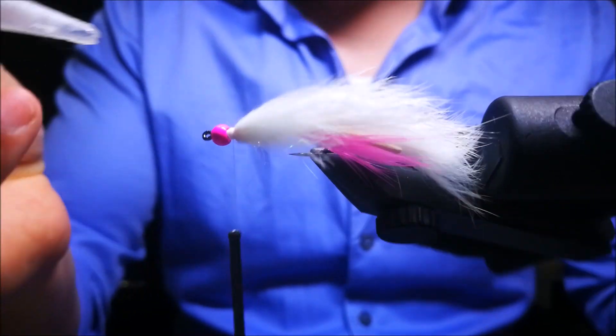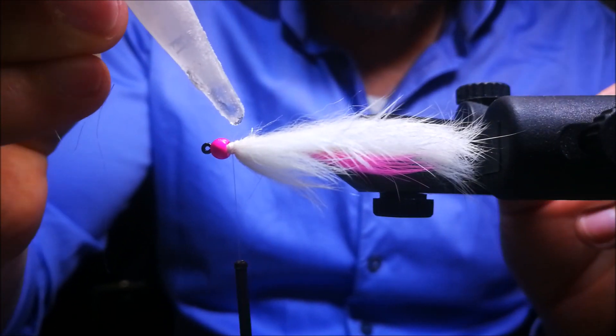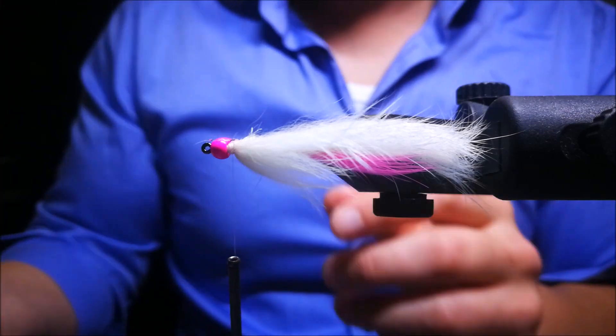Now secure the thread wraps with some superglue. And when you feel it's dry, you can make a dubbing loop.